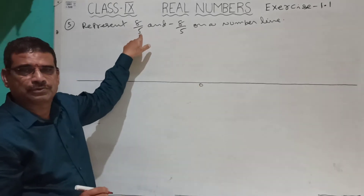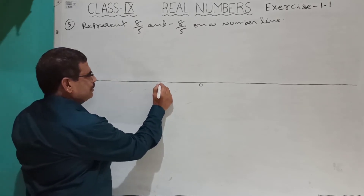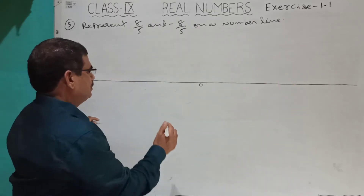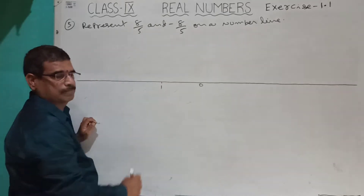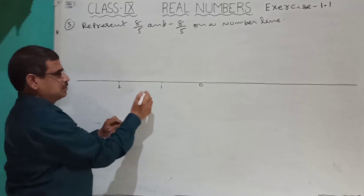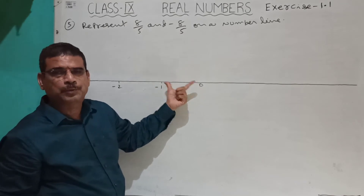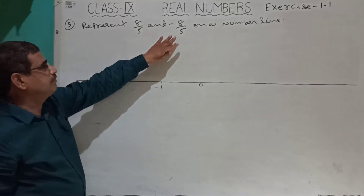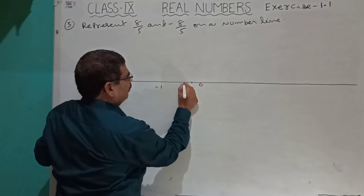Here the denominator is 5. Generally, left side has negative values and right side has positive values. Assume this is 1 and this is 2; left side has minus 1 and minus 2. Each part should be divided into 5 parts, because the denominator is 5.